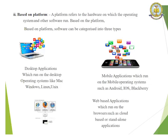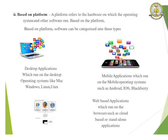Based on the platform: a platform refers to the hardware on which the operating system and other software run. Based on platforms, software is classified into three parts: desktop applications, mobile applications, and web-based applications. Desktop applications run on desktop operating systems like Mac, Windows, Linux, Unix, etc. Mobile applications run on mobile operating systems such as Android, iOS, Blackberry, etc. Web-based applications run on browsers such as cloud-based or standalone applications.